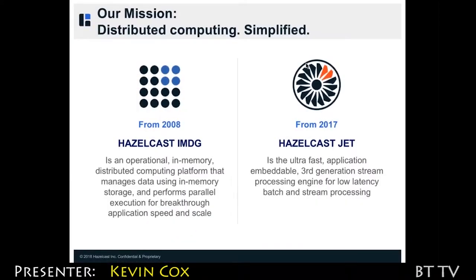Hazelcast has been around for about eight years, and we're best known for our Hazelcast in-memory data grid solution. It is an operational in-memory distributed computing platform that manages data using in-memory storage. As a grid, it operates in parallel, offering resilience and breakthrough performance. This allows any application to operate at speed and scale, which is necessary when you look at the transition to the cloud and the direct access of consumers to applications and data analytics. We are here today to also introduce you to our new ultra-fast third generation stream processing engine for low latency batch and stream processing.